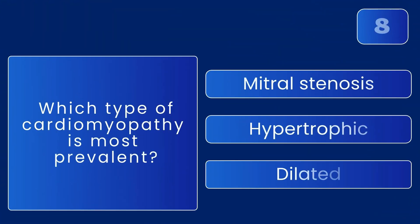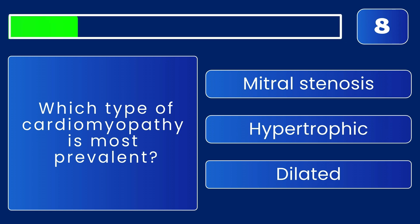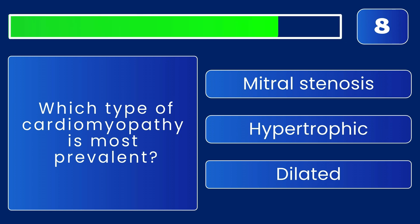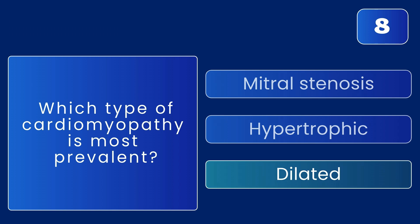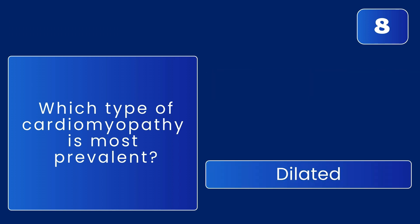Which type of cardiomyopathy is most prevalent? It's dilated cardiomyopathy — it's the most common form.